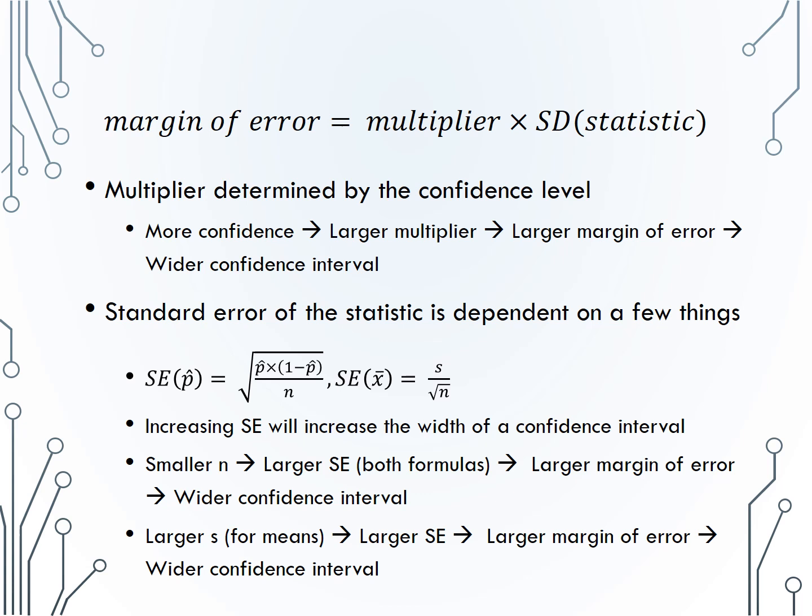The formula for standard error is dependent on a few things. If we are finding the standard error of a sample proportion, we use the formula the square root of p hat times 1 minus p hat over n. If instead we're finding the standard error of a sample mean, we use the formula s over the square root of n.